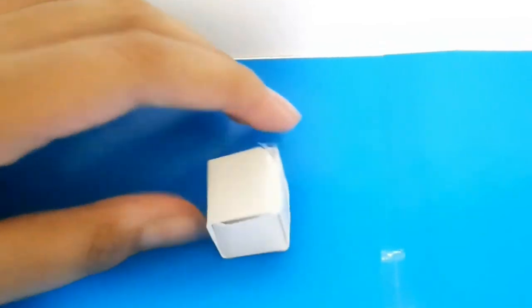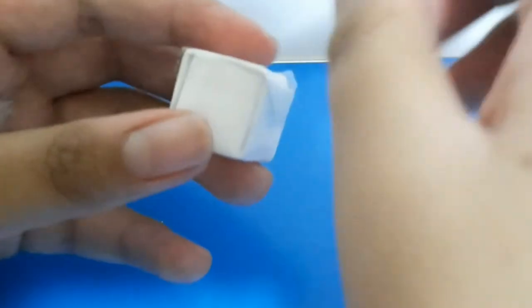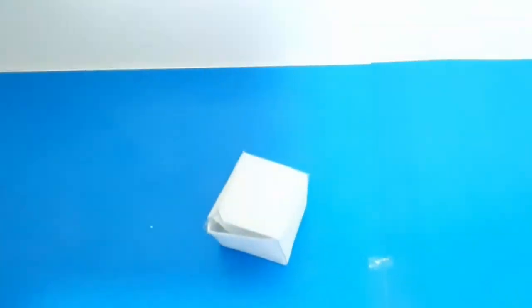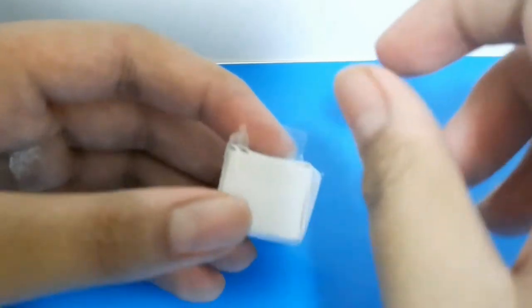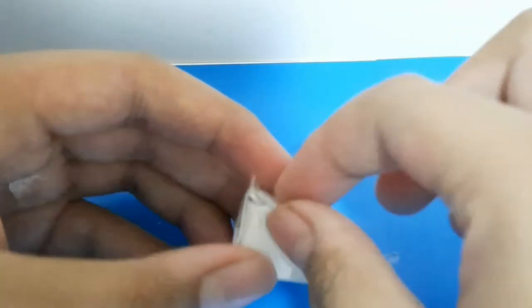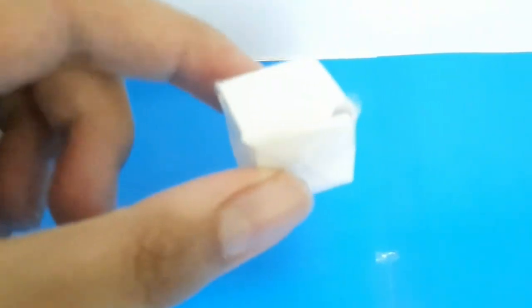Now, take another piece of tape, and tape the sides closed. Do the other side too. And then, you got yourself a pretty cool little cube just like this.